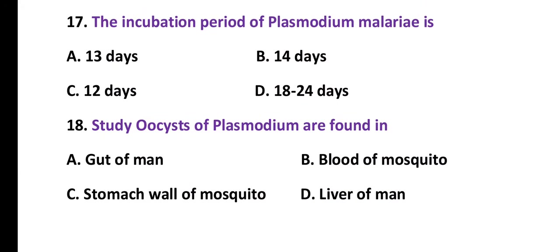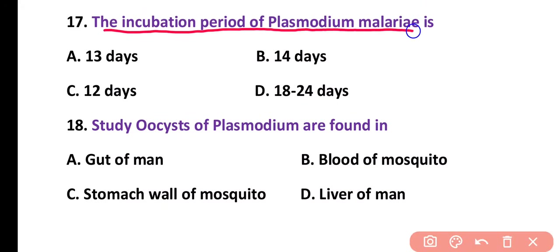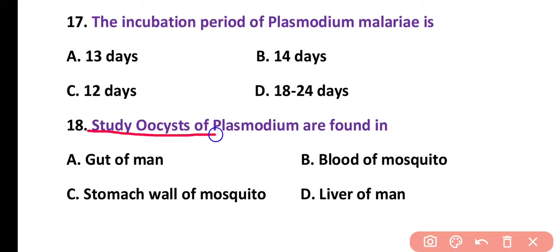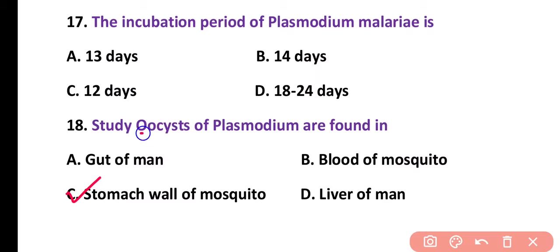Question number 17. Incubation period of Plasmodium malariae is: 13 days, 14 days, 12 days, or 18 to 24 days. Correct answer is option D. The incubation period of Plasmodium malariae, which is the longest incubation period, consists of 18 to 24 days. Question number 18. Oocysts of Plasmodium are found in: guts of man, blood of mosquito, stomach of mosquito, or liver of man. Correct answer is option C.